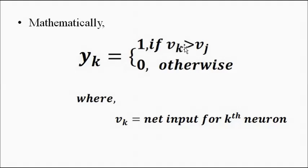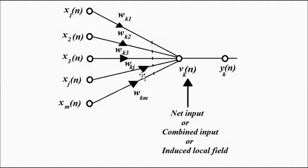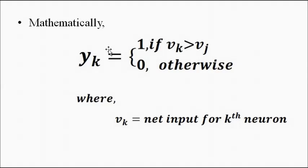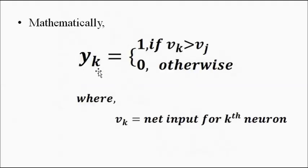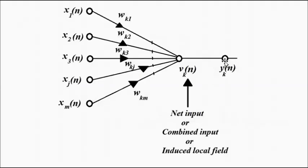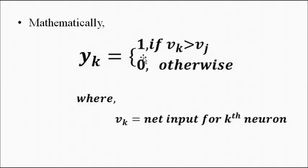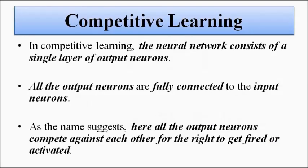Mathematically, we represent it as follows: the neuron for which the induced local field V_K — where K represents a particular instance — is greater than all the remaining neurons, that Kth neuron's output value will be 1 and all the other neurons will be 0. This is the whole concept of competitive learning — it is essentially a competition.